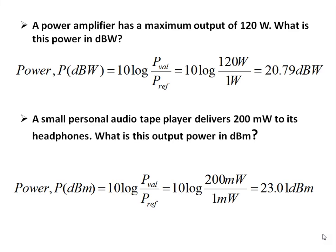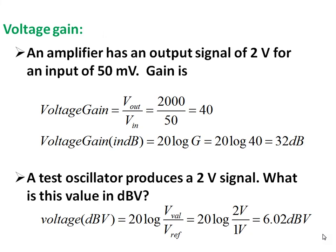Voltage gain can be expressed in decibels. For an output signal of 2 volts for an input of 50 millivolts, the gain equals V out by V in, which is 40. In decibels it's 20 log of G equals 32 dB. For an absolute value of voltage in decibels, the unit is dBV. A test oscillator produces a 2 volt signal. With reference of 1 volt, this is 6.02 dBV.